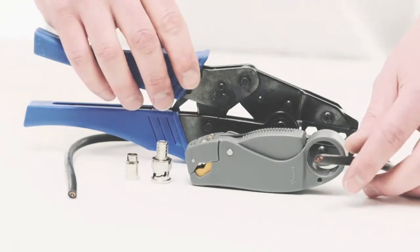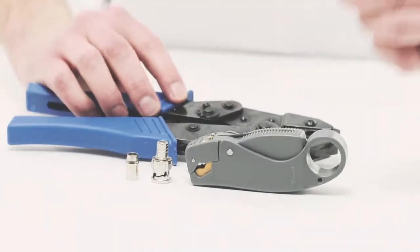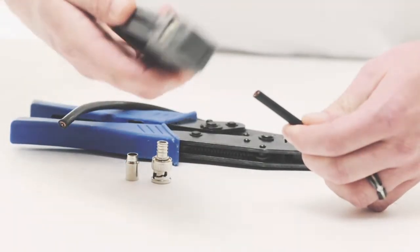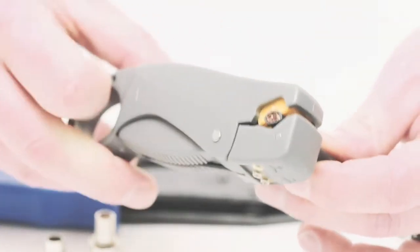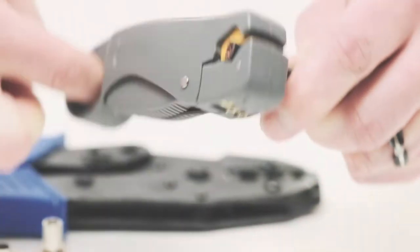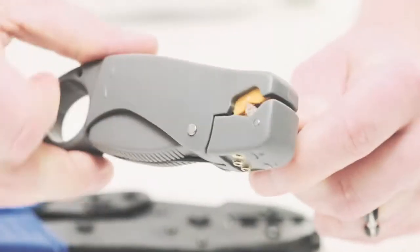To begin, take your strip tool and strip back the outer jacket. The coax stripper will strip the outer jacket and also the dielectric. Simply rotate it around the outside of the cable a few times and pull off the jacket.